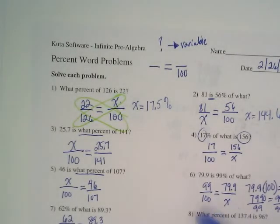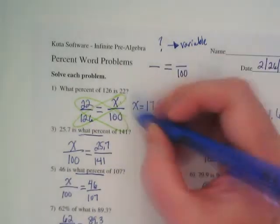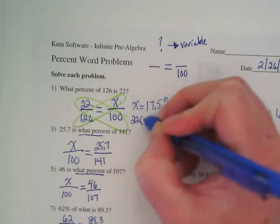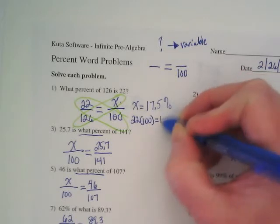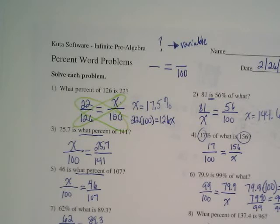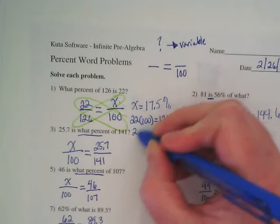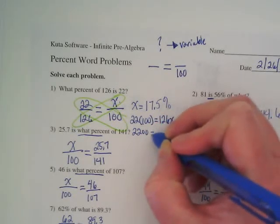We spent some time yesterday setting up proportions, but we did not spend time solving them. I want you today to solve them. Notice what I have here is 22 times 100 equals 126 times X. What is 22 times 100 going to be? 2,200. I've already written the answer here.